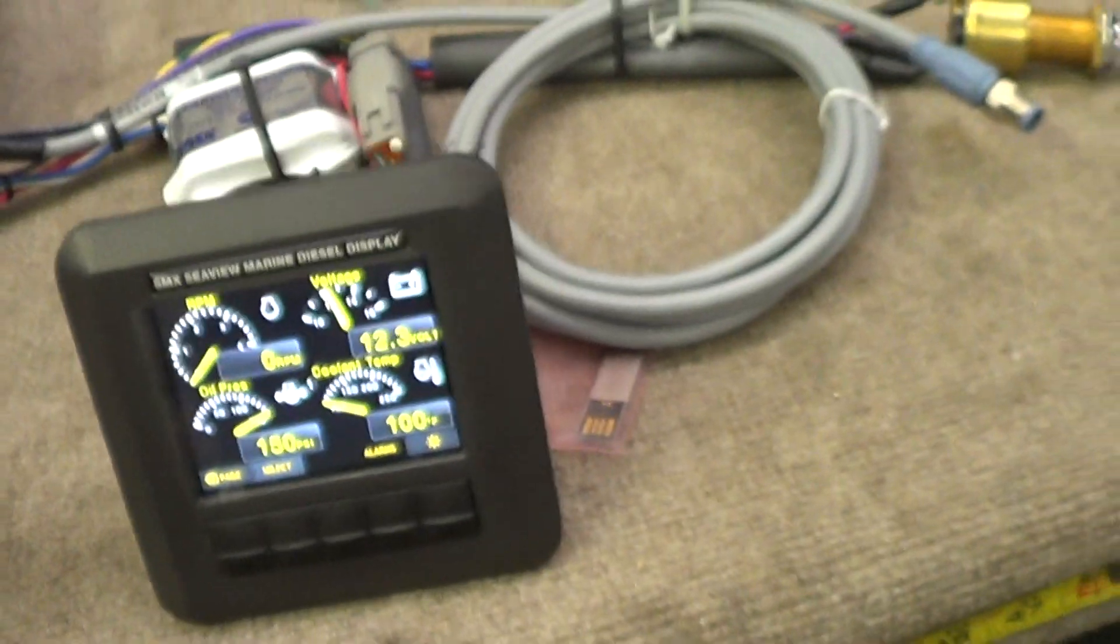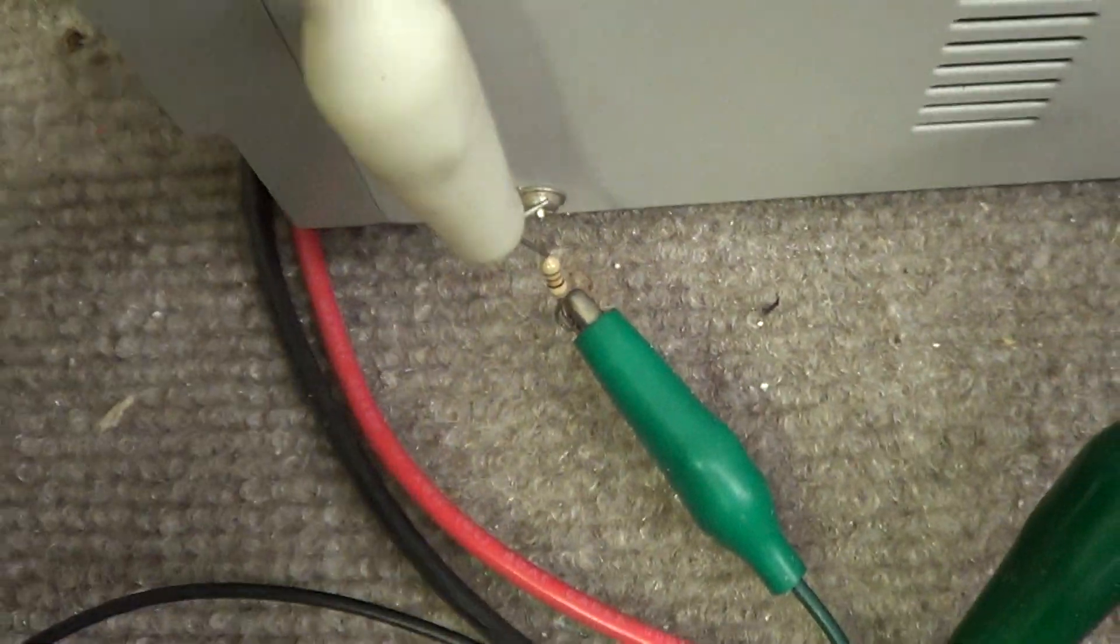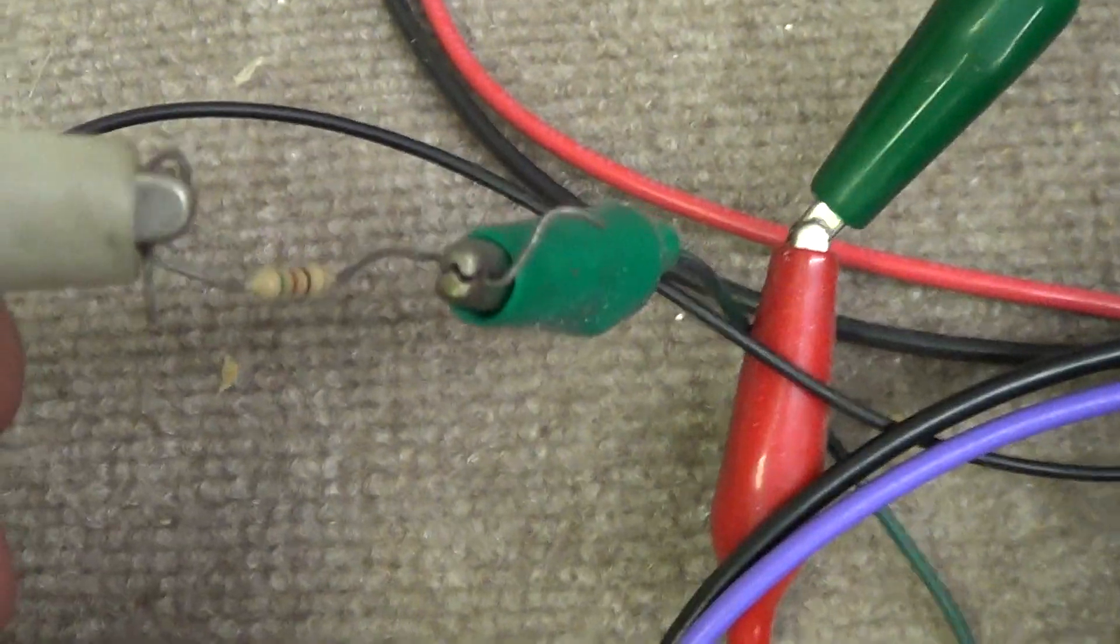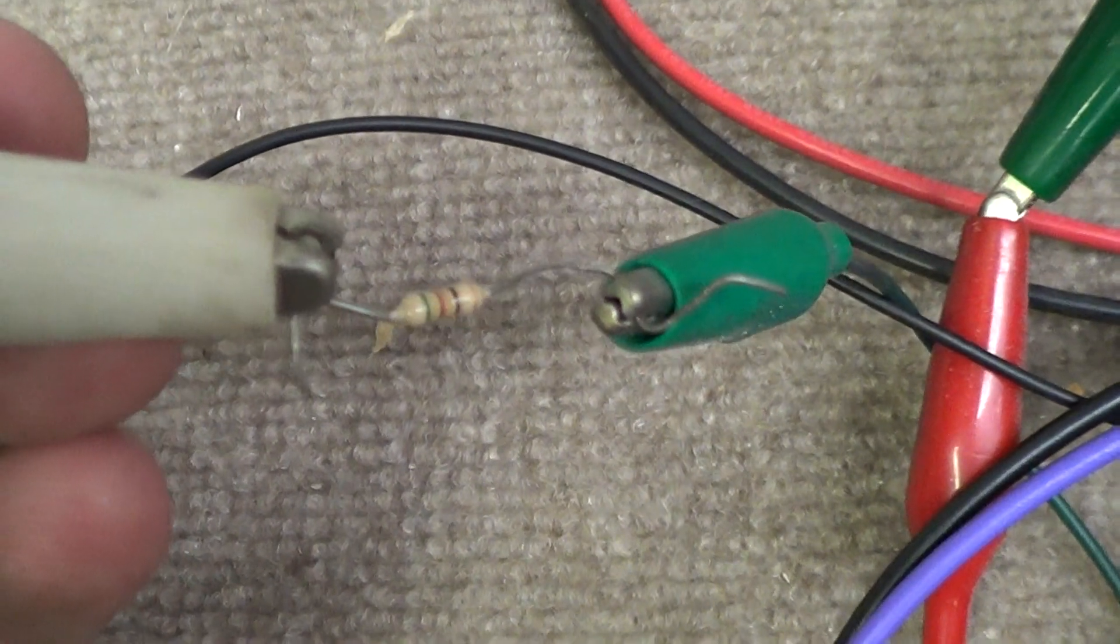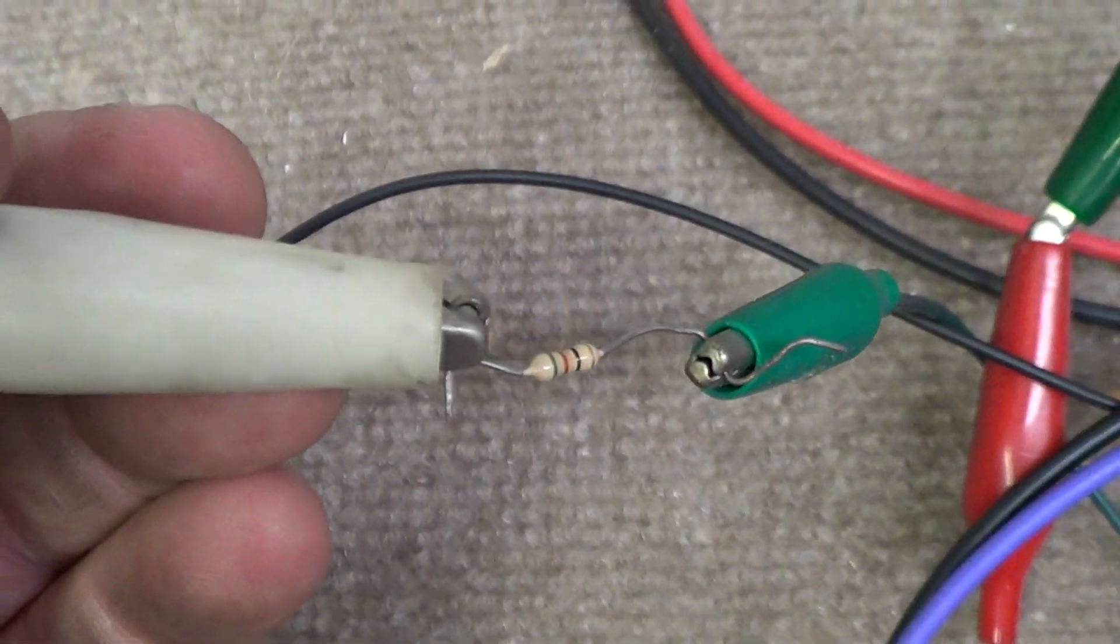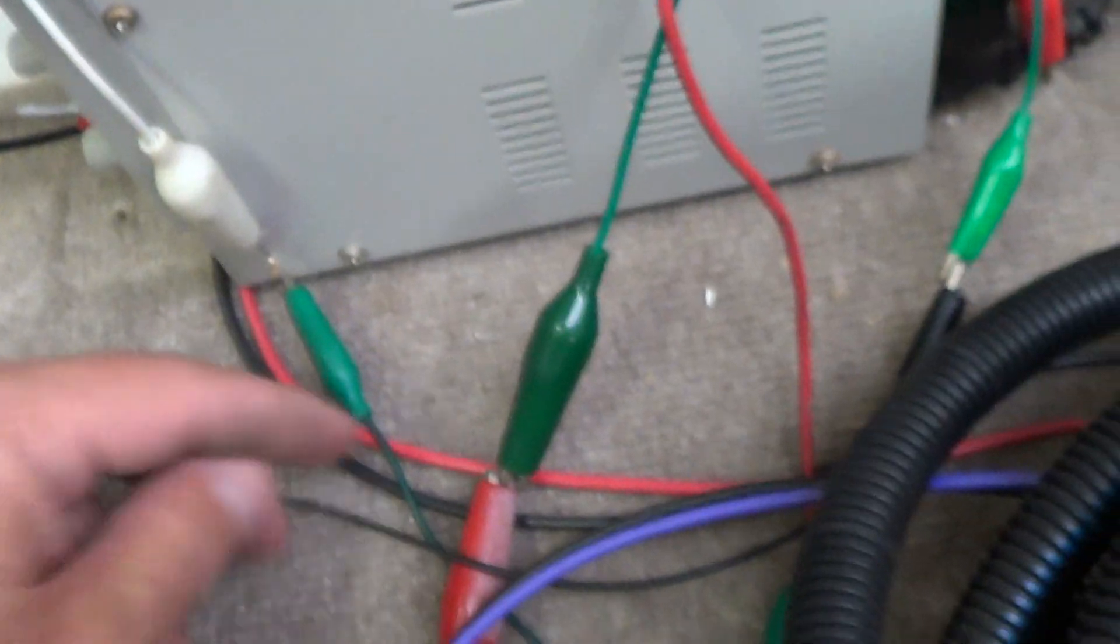So what we like to do, just to test to make sure the senders are working, is we just use a standard little radio shack resistor to mimic a sending unit. Now that's obviously a fixed value, but we just want to know that the screen is doing what it's supposed to be doing.